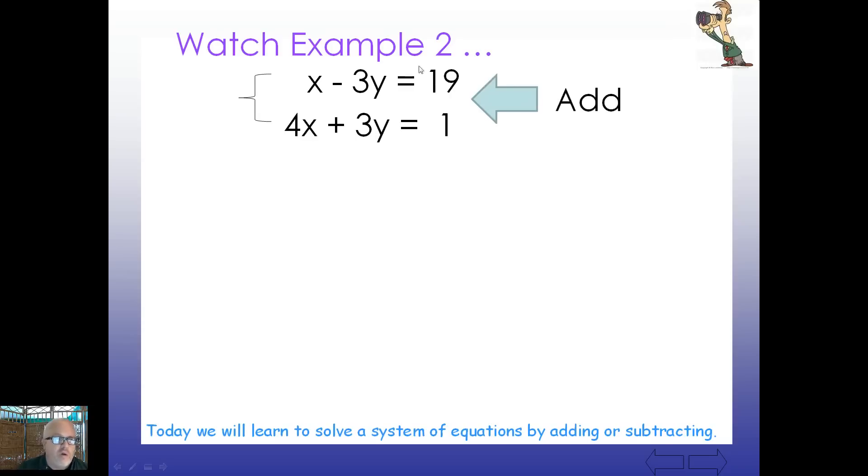This, of course, works. And some of you will see this right away. Because these two coefficients are opposites of each other. And we know that a number plus its opposite add up to 0. The 0 property of multiplication says 0 times anything is 0. So we can eliminate here the letter Y. Add straight down. 1X plus 4X is, of course, 5X. These two cancel each other out. 19 plus 1 is 20. Obviously, X is 4.